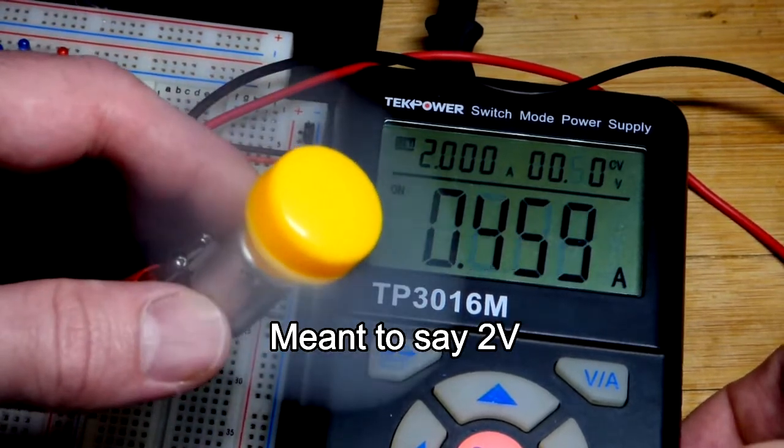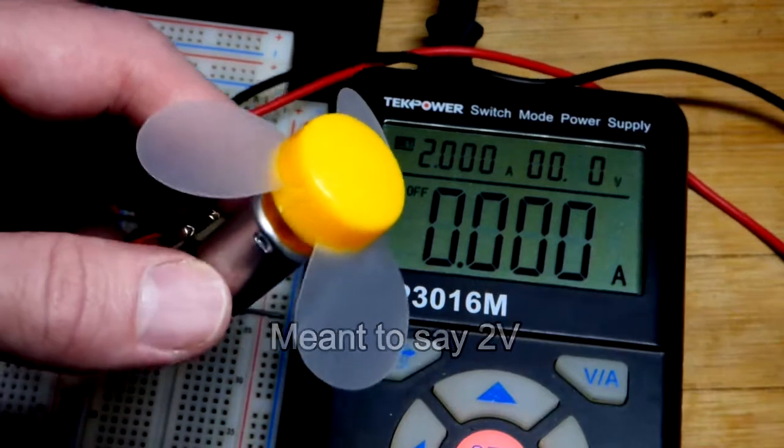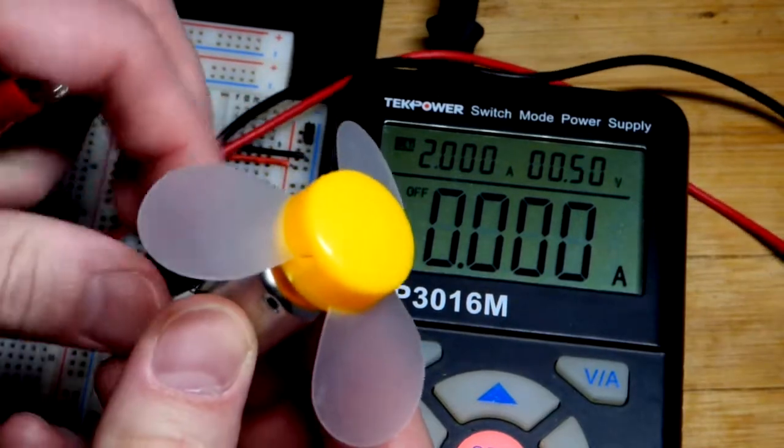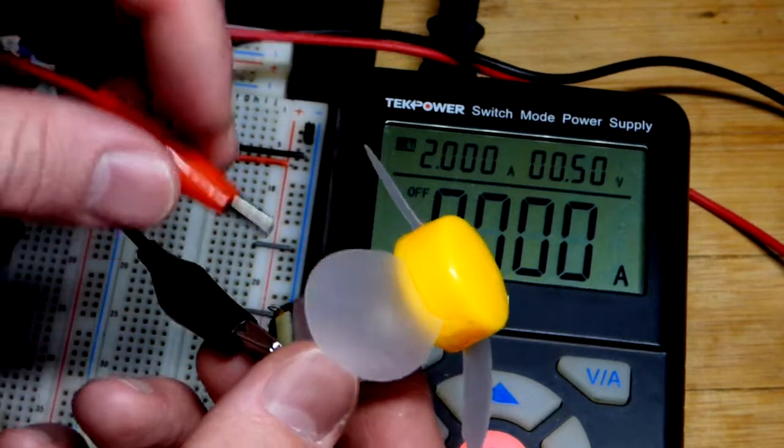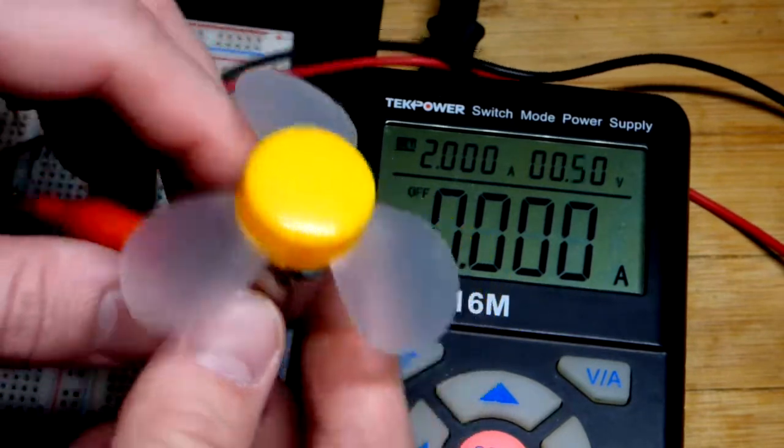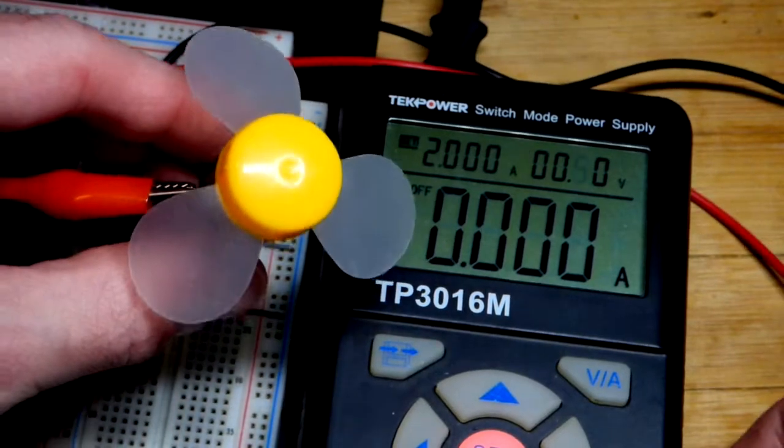So that is counter clockwise right there going that way just in case it's a little hard to tell while watching the video. And now we're just going to swap which side positive and negative are right there and turn the power.